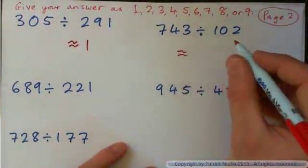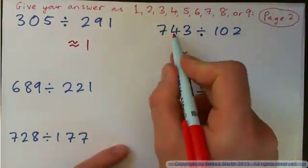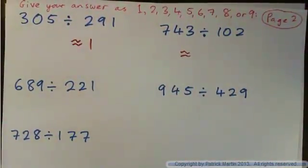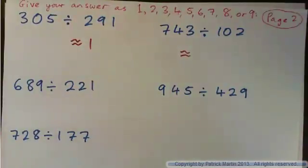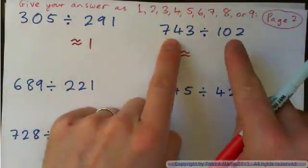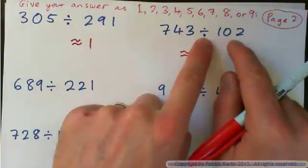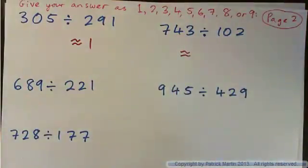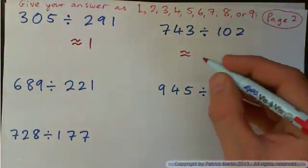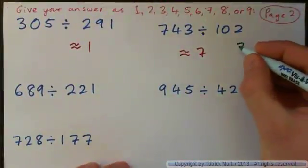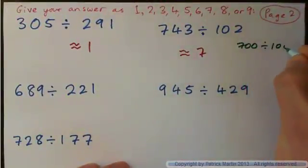How many hundred-and-twos are approximately in this number? Think of it this way: this is basically 700 and this is basically 100, so 700 divided by 100 is about 7. We've basically got 700 divided by 100 here.